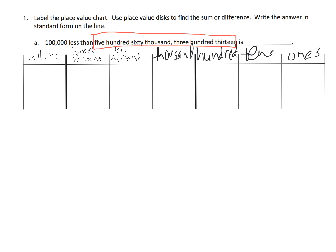Let's model that. Five hundred sixty thousand means we're going to have five in the hundred thousands. Sixty thousand means we're going to have six in the ten thousands section — I'm going to make it a vertical ten frame. So there's our five hundred sixty thousand.